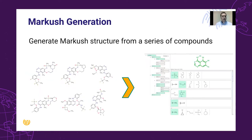The first step is the creation of the scaffold and the R-group tree from the list of compounds. Formulating a scaffold and corresponding substituent list is relatively easy if you have only six compounds. However, it can be a very complex and time-consuming task if you try to formulate the same Markush structure for hundreds of compounds.